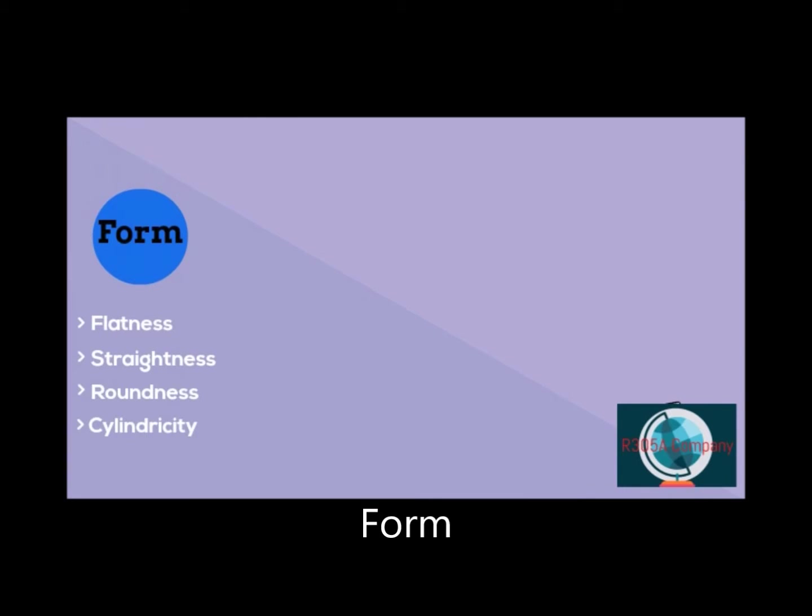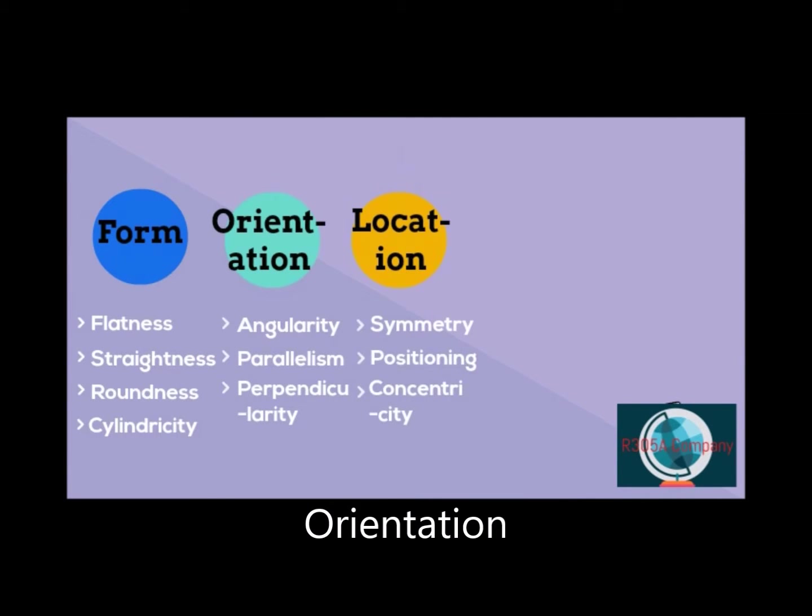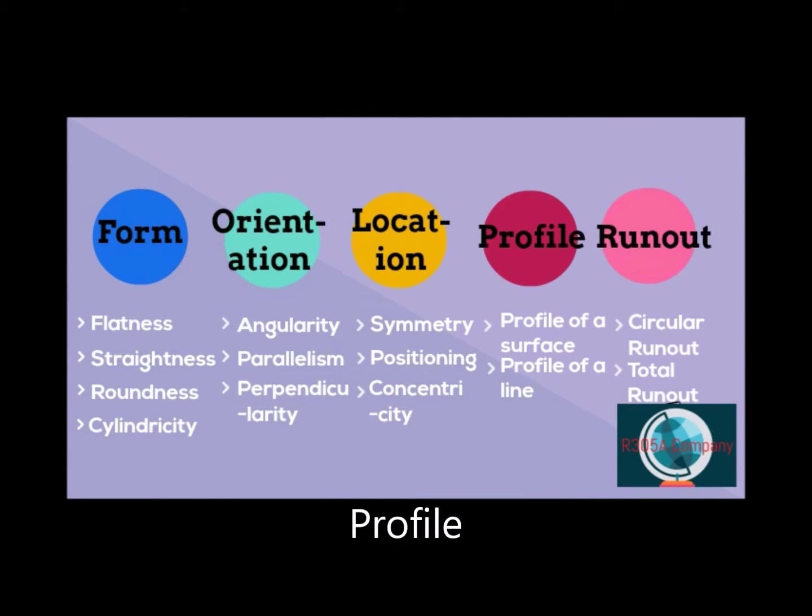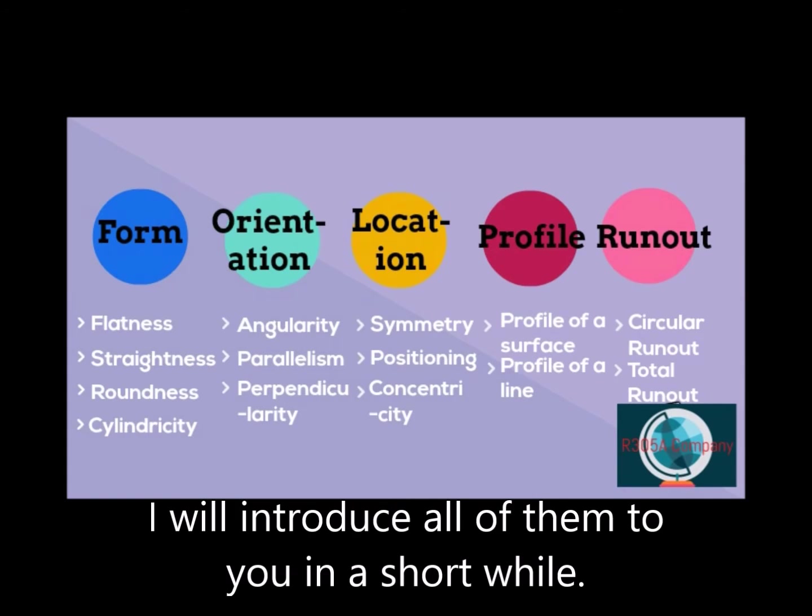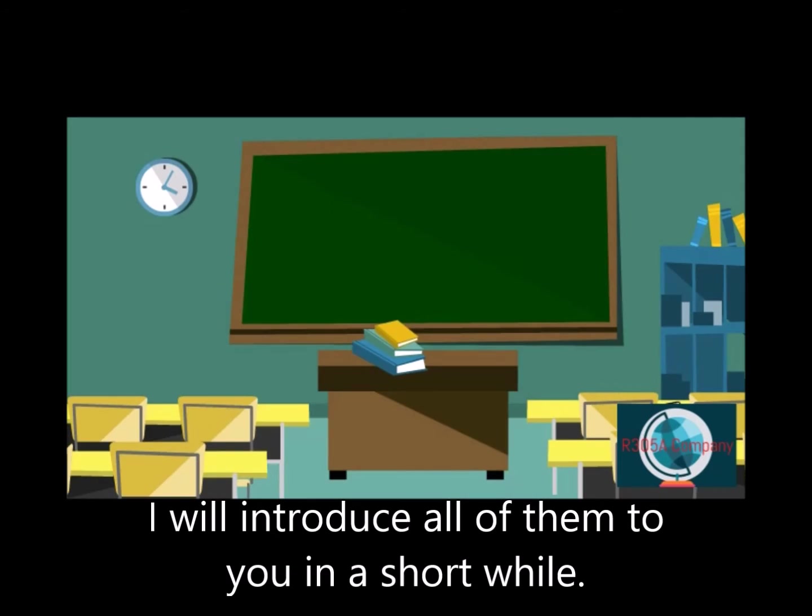GD&T is split into five different segments: form, orientation, location, profile, and run out. I will introduce you to all of them in a short while.